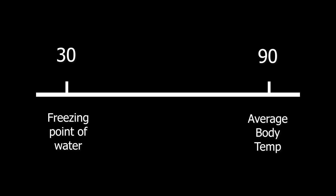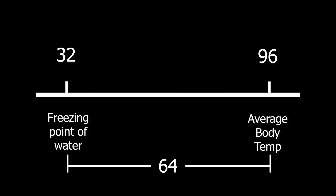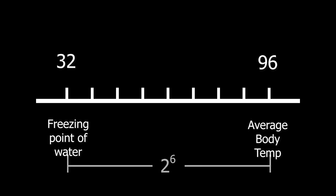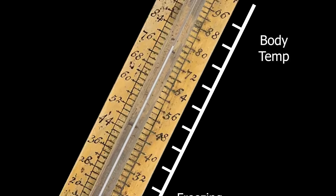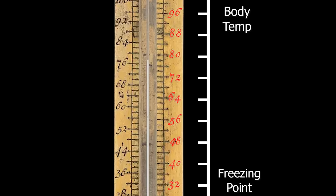Fahrenheit then adjusted the freezing point and body temperature to 32 and 96, so the two numbers are separated by 64. This was very intentionally done because 64 is the sixth power of two, which made it easy for him to mark up his instruments by bisecting that range six times. This is why his first thermometer was inscribed with values separated by eight instead of a more easily divisible ten.